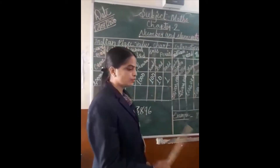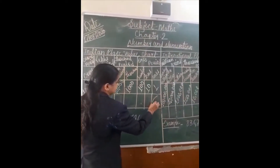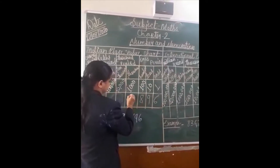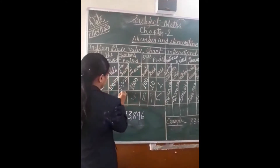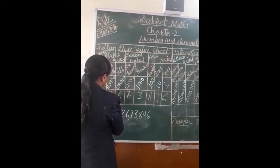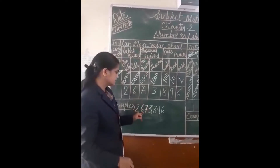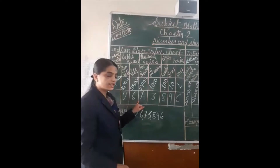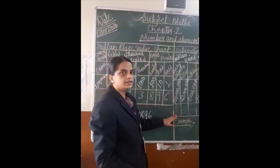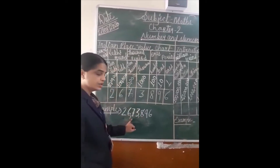Now we will put these digits in their proper places: 6, 9, 8, 3, 7, 6, 2. Now we can get the number name according to the Indian system: 26,73,896. In the Indian system, we put commas after each two digits.